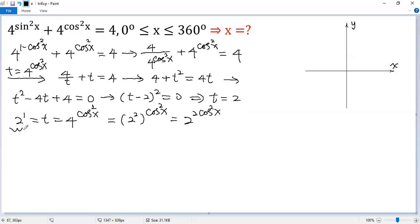So we get 2 to the power of 2 cos²x equals 2¹. Both sides divided by 2, so we get cos²x equals half. Taking square root, so we get cos x equals plus or minus square root of 2 over 2.